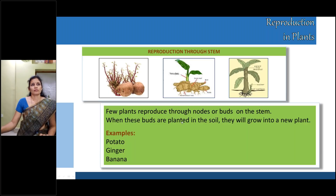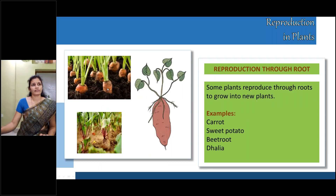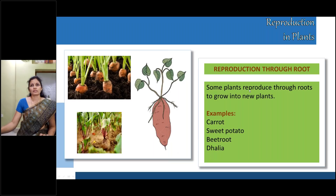Next, can you recognize this part? That is carrot. And this picture is beetroot. And this picture is sweet potato. These are all examples of reproduction through root. Some plants reproduce through roots to grow into new plants. Examples: carrot, sweet potato, beetroot, and dahlia also reproduce through roots.